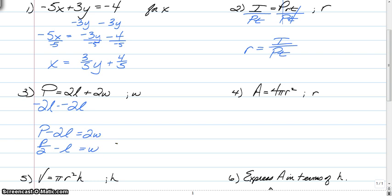For number 4, we have to get r by itself. Now this one's a little tricky. You've got to remember a couple little things. First of all, we have to get r² by itself. So we're going to divide both sides by 4π.